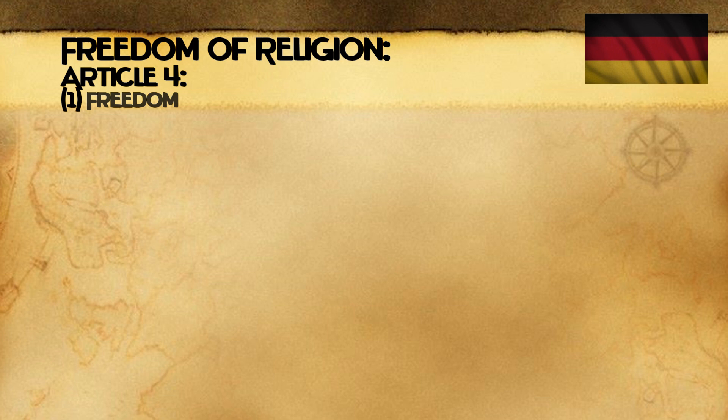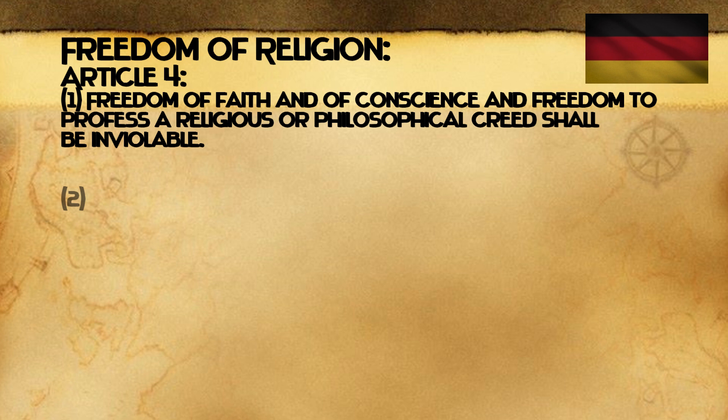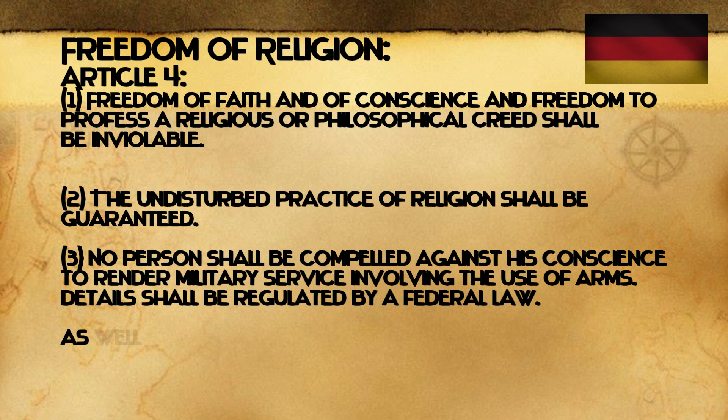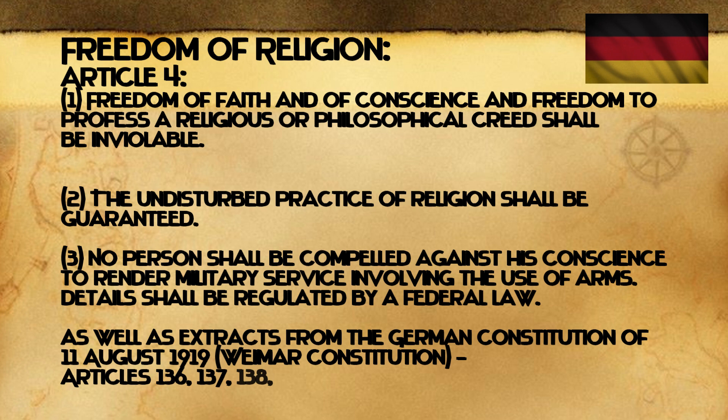So what does the Deutsche Grundgesetz say? In terms of freedom of religion, we can look at Article 4: "Freedom of faith, of consciousness, and freedom to profess a religion or philosophical creed shall be inviolable. The undisturbed practice of religion shall be guaranteed. No person shall be compelled against his conscience to render military service involving the use of arms. Details shall be regulated by federal law," as well as extracts from the Weimar Constitution of the 11th of August, 1919 — that's Articles 136, 137, 138, 139, and 141.